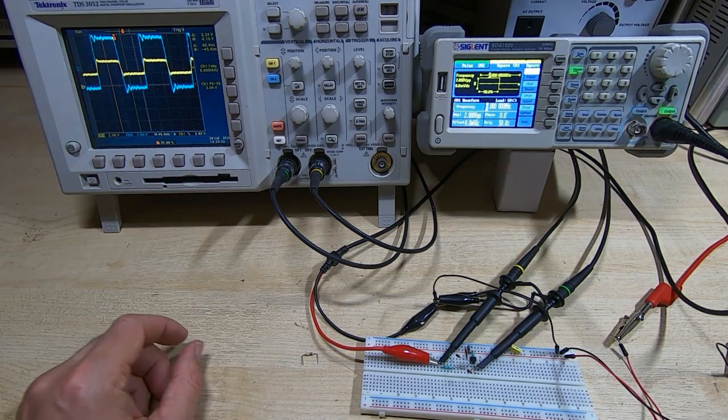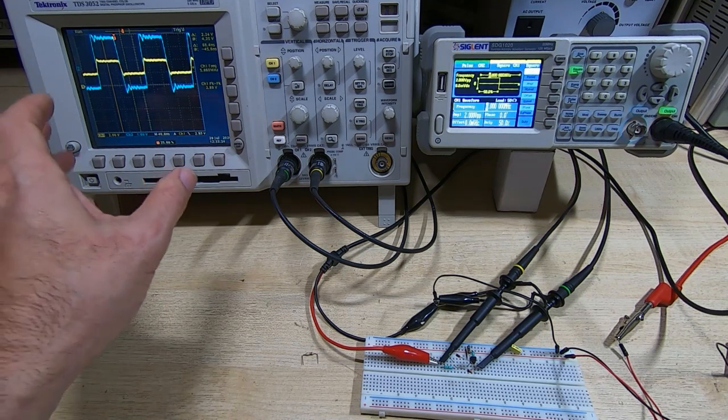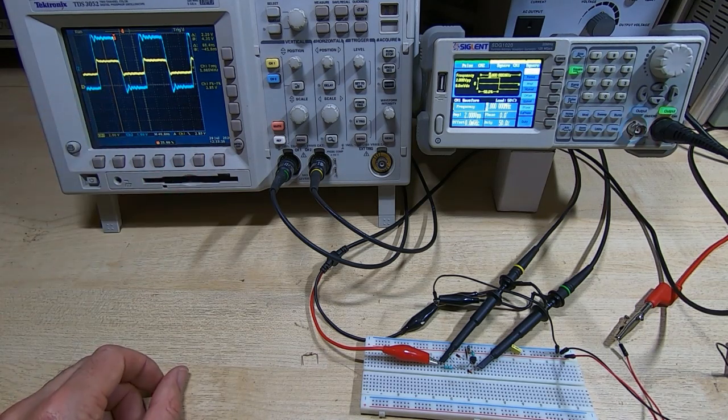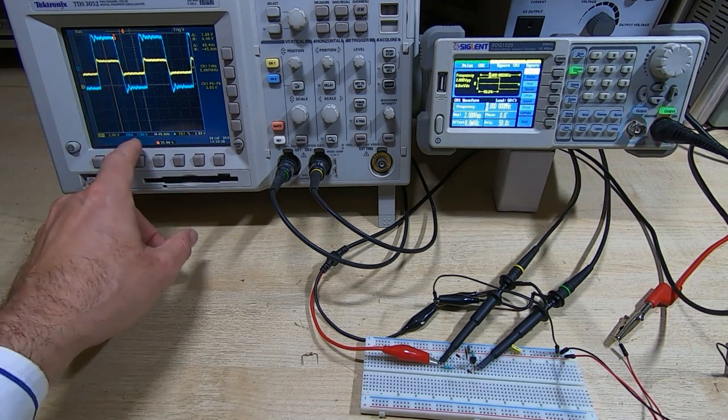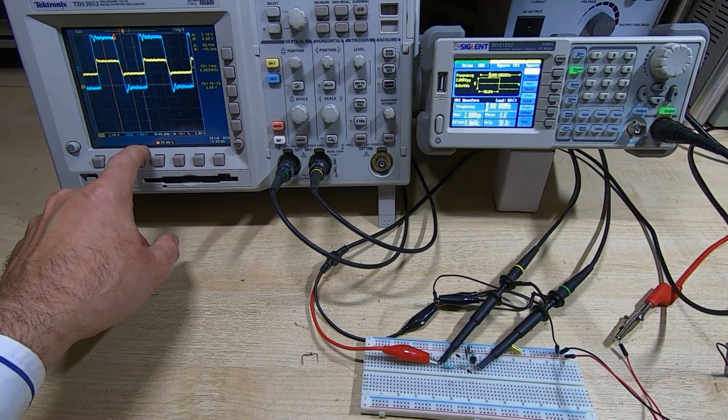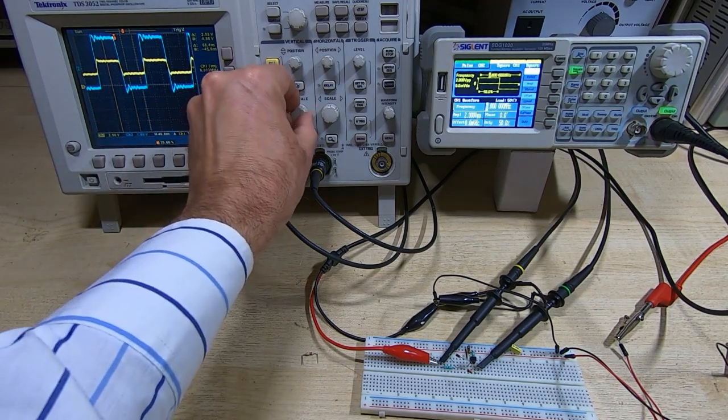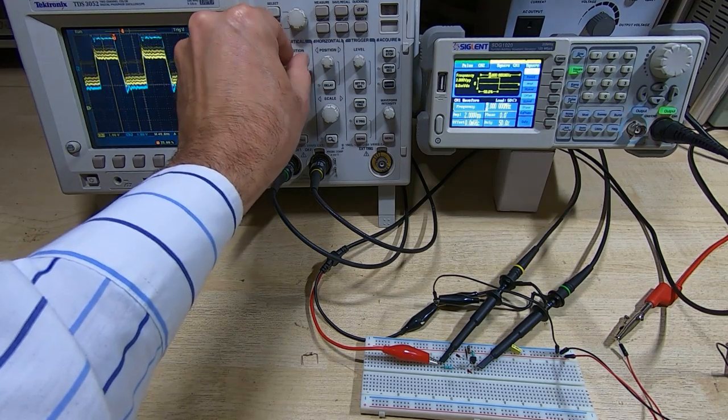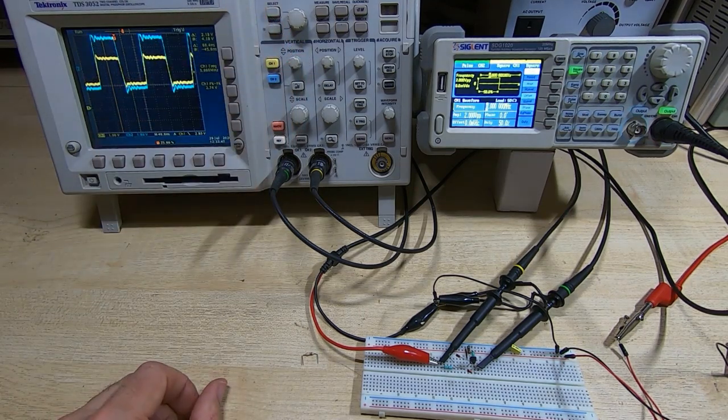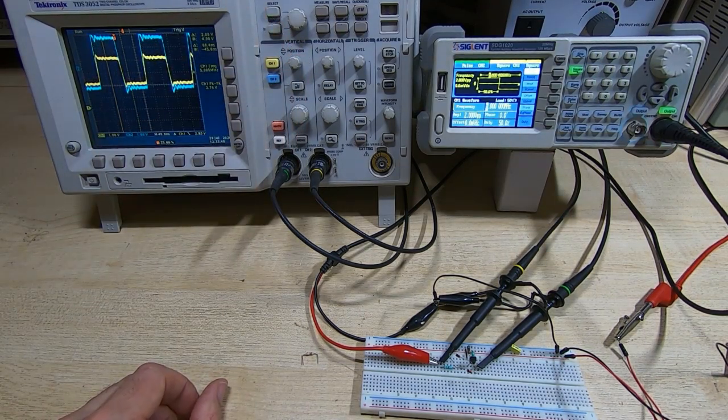But what we'll do now is increase the clock frequency and see how high we can go. I will turn up the gain on the scope so that we're getting a clearer display on the scope - we can see exactly what the signal is doing.